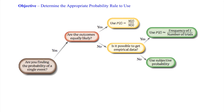When it comes to exam questions, the first thing we want to ask is: are we finding the probability of a single event? Meaning there's not more than one thing happening — we're only asked the probability of one thing. That leads us to the next question: are these outcomes equally likely? As soon as we talk about one single event, the first thing you want to be thinking is, do we have equally likely outcomes?